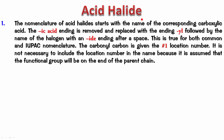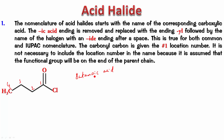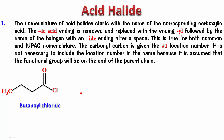Let's check out a few examples — pause the video, name the compound, and play it back to check your answer. For this first example there is no branching, so there is no issue with the parent chain. The numbering is 1, 2, 3, 4 — though you don't really need to number since there are no substituents. The corresponding acid is butanoic acid; remove the 'ic acid' and add 'yl chloride'. So this is butanoyl chloride.